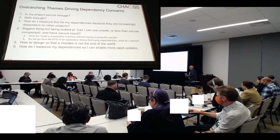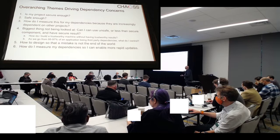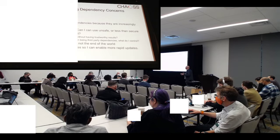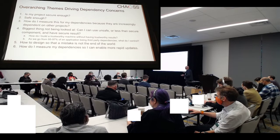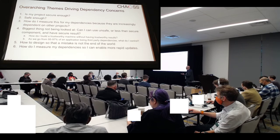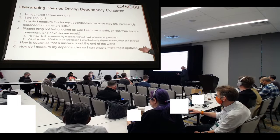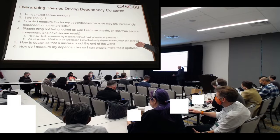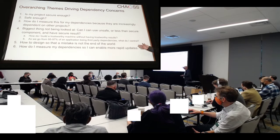We want to understand if our project is secure, if it's safe, and how do we measure dependencies. That was the big one, because there are a lot of tools out there that measure different dimensions of dependency. The biggest thing not being looked at is: can I use a dependency that's fundamentally unsafe if I can build something trustworthy around it, and how do I handle it if a lot of my application's functionality actually derives itself from dependencies?